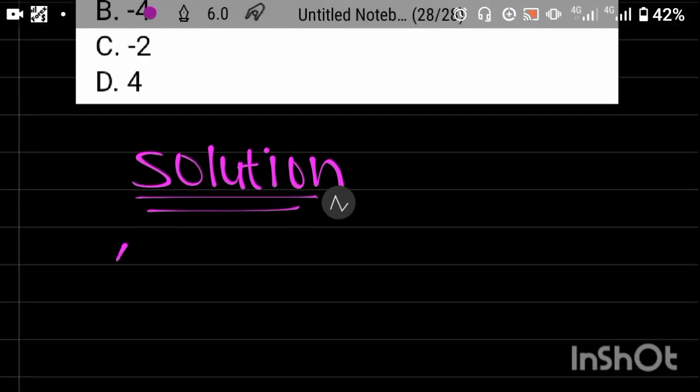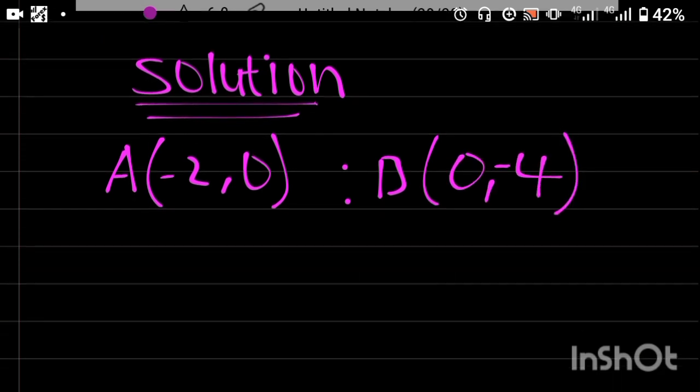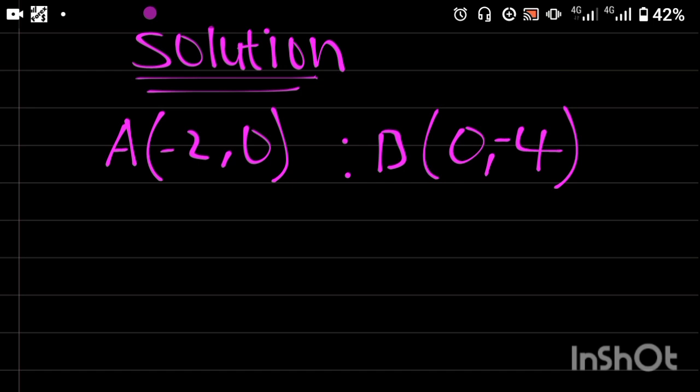So the first thing is I have point A at (-2, 0) and point B at (0, -4). Taking the first point to be x1 comma y1, I'm going to have x1 equal to -2 while y1 is equal to 0.